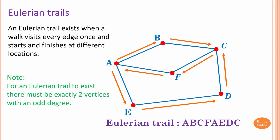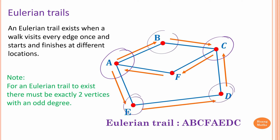Please note, for an Eulerian trail to exist, there must be exactly two vertices with an odd degree. Let's check this out. Vertex A has degree 3, and C has degree 3. The rest have degree 2. So that is valid — exactly two vertices with odd degree.